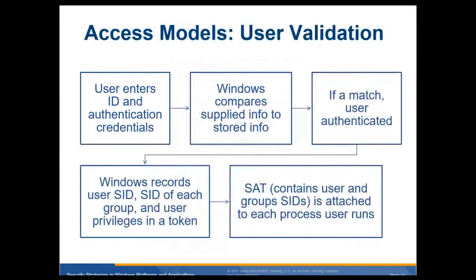Access models — user validation. The user enters an ID and authentication credentials, username and password most of the time. Windows compares the supplied information to the stored info; if it matches, they're authenticated. Windows records the user's security ID, the SID of each group and user privilege, and creates a security access token. The SAT contains user and group SIDs and is attached to each process the user runs. When they go to run a process, it checks the security access token and makes sure they are authorized.